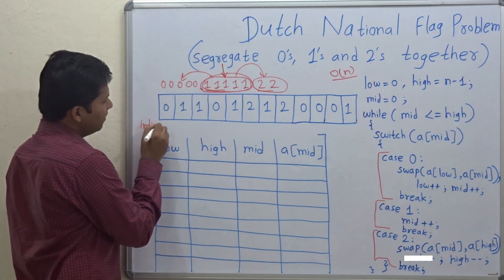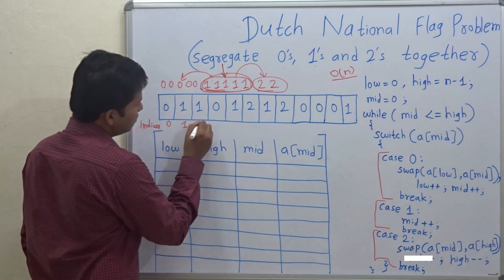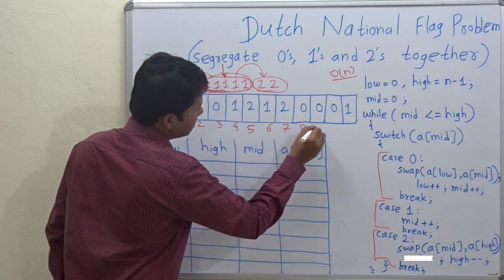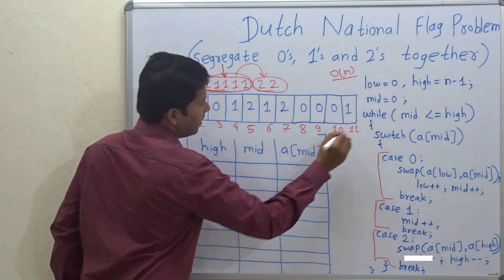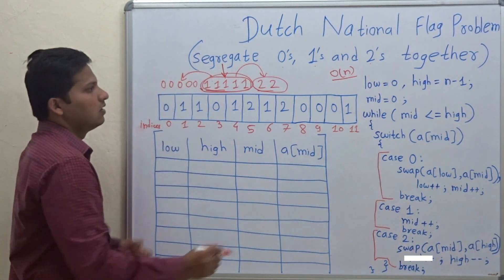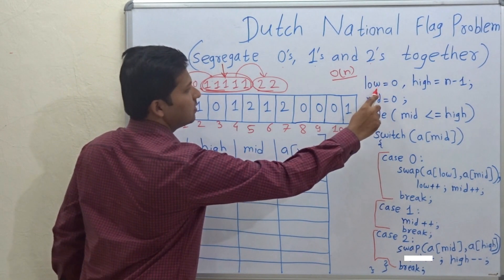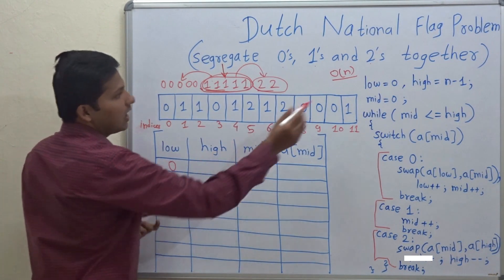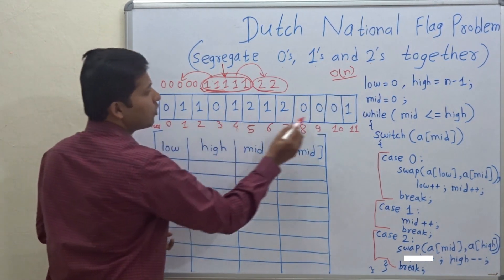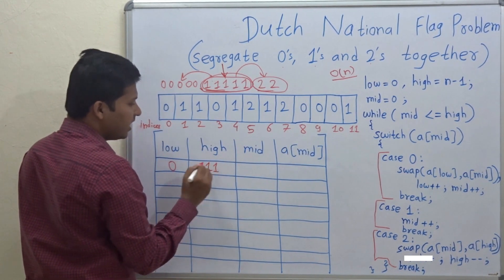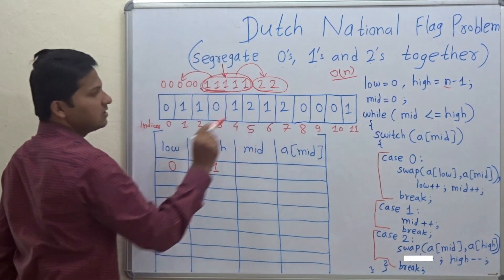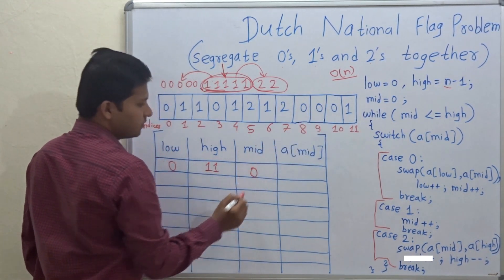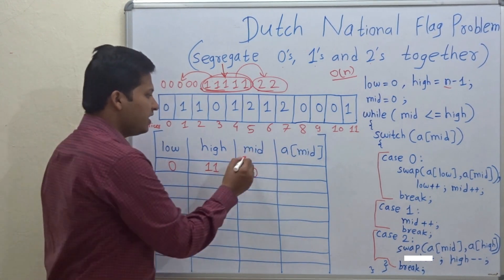Let's solve this problem. The indices for the array are zero through eleven. The first variable is low = 0, high = n - 1. The total number of elements is 12, so n - 1 is 11. Mid is initialized to zero.